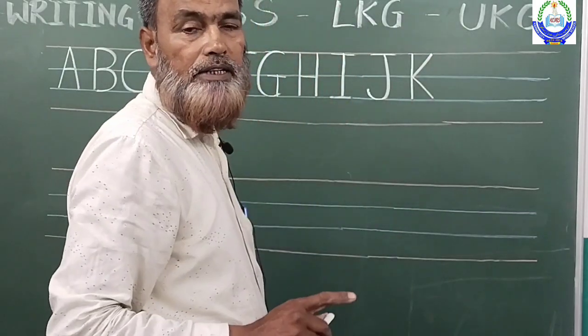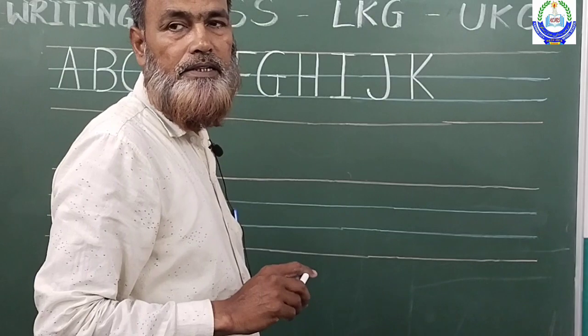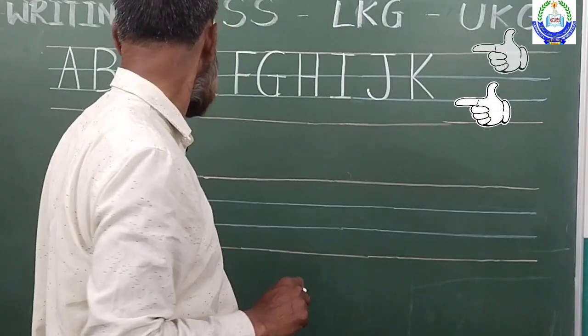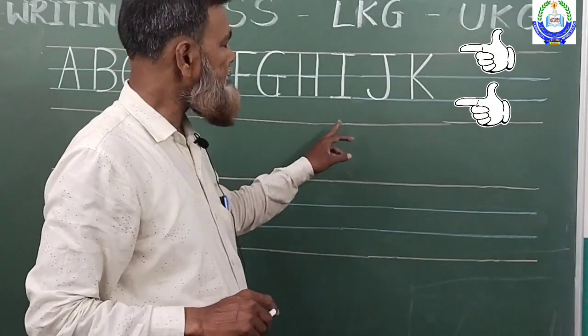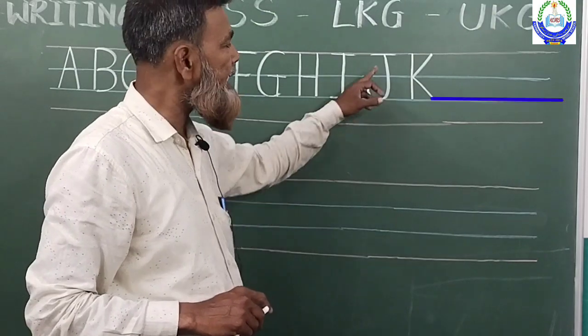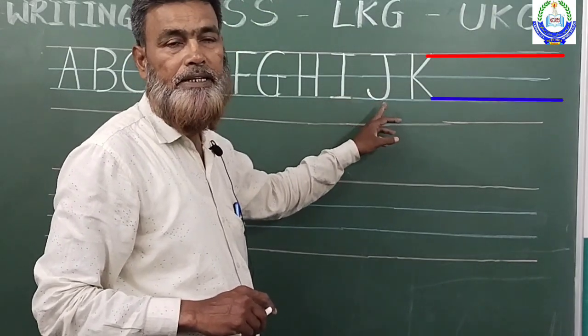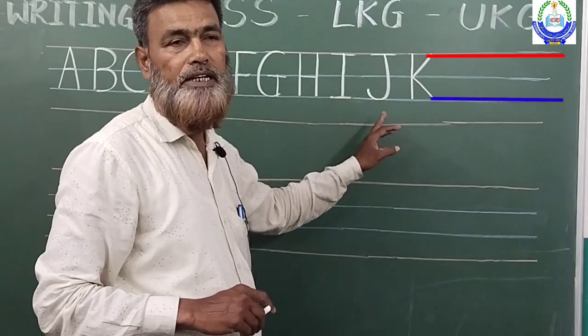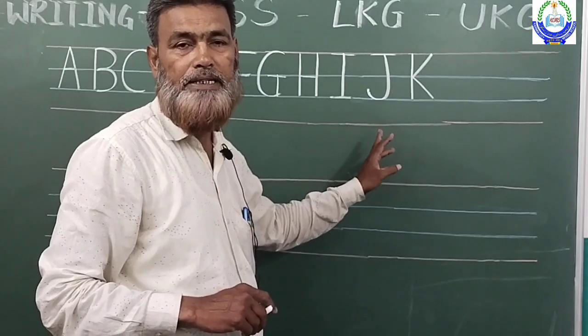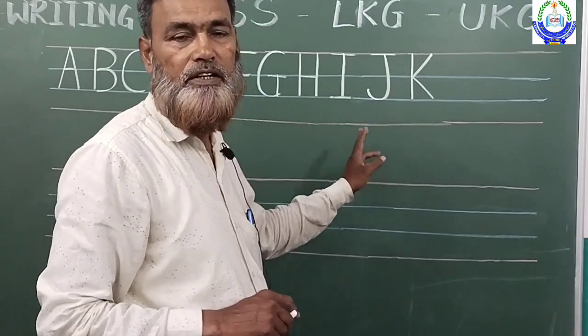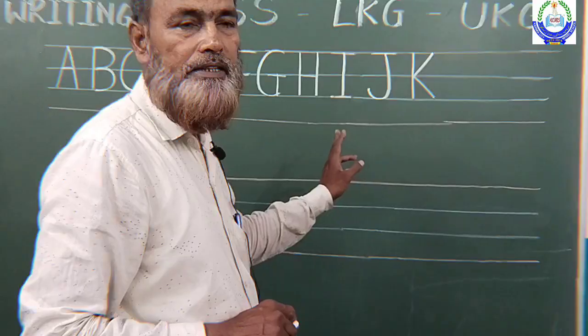Now see how the lines are maintained, boys and girls. See how the lines are maintained. K, in capital letters. How the lines are maintained, red line to blue line. You have to maintain the line and I am writing very good as it is shown. You practice at home. I will finish A to Z, then you practice at home.